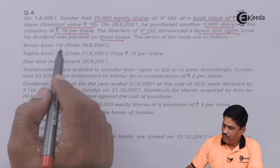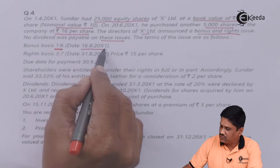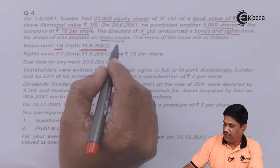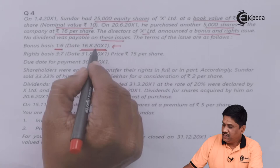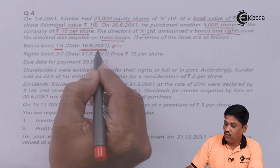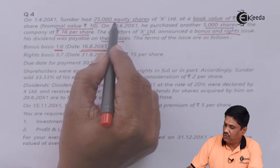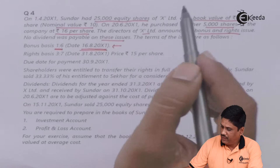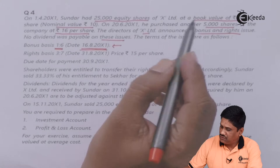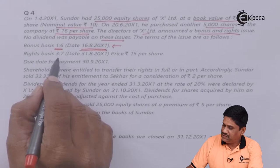The terms of issue are as follows. Bonus basis is 1:6 and the date is 16th August 200X1. This is what we call the record date. On 16th August, he is definitely holding 30,000 shares. Based on 30,000 shares, he will get bonus shares.